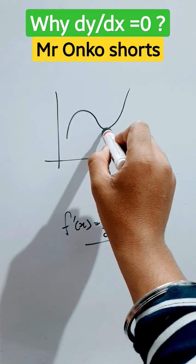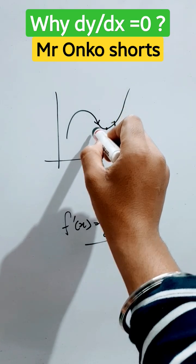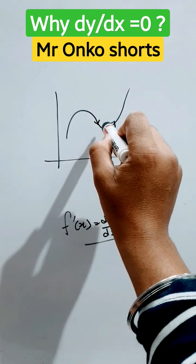After this point, the function has started increasing. And before the point, the function has started decreasing. So this is the minima point.